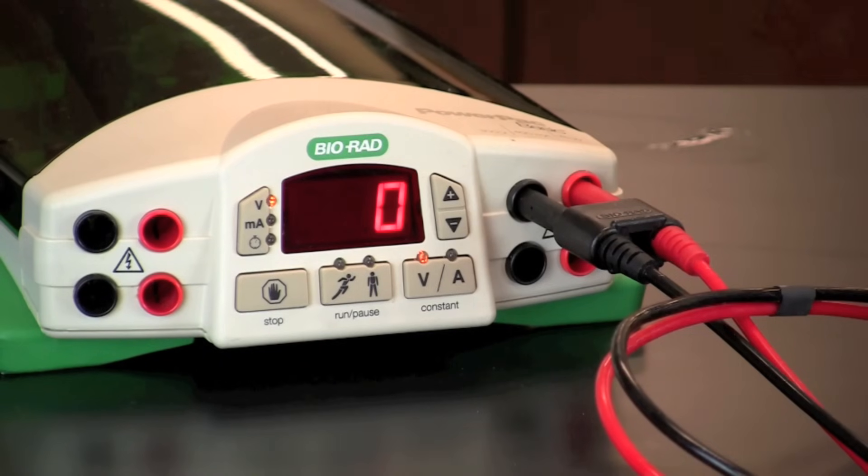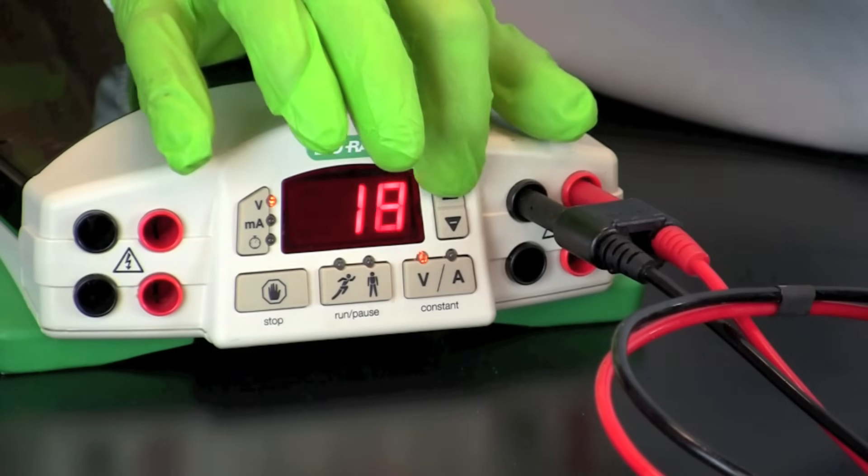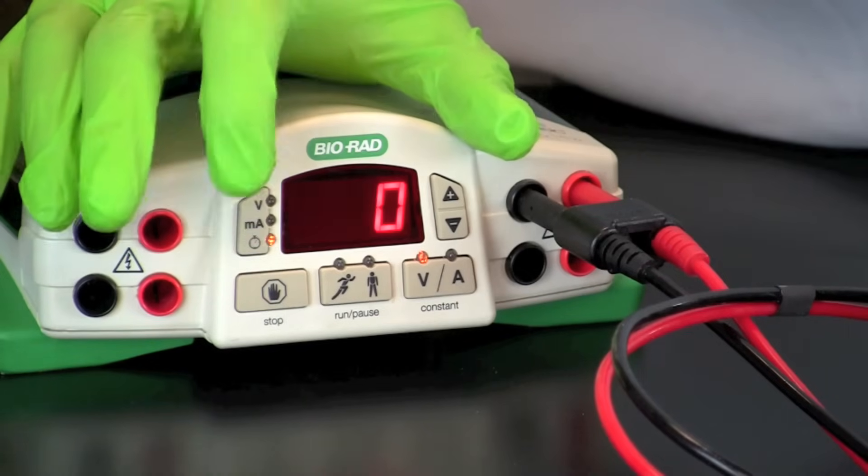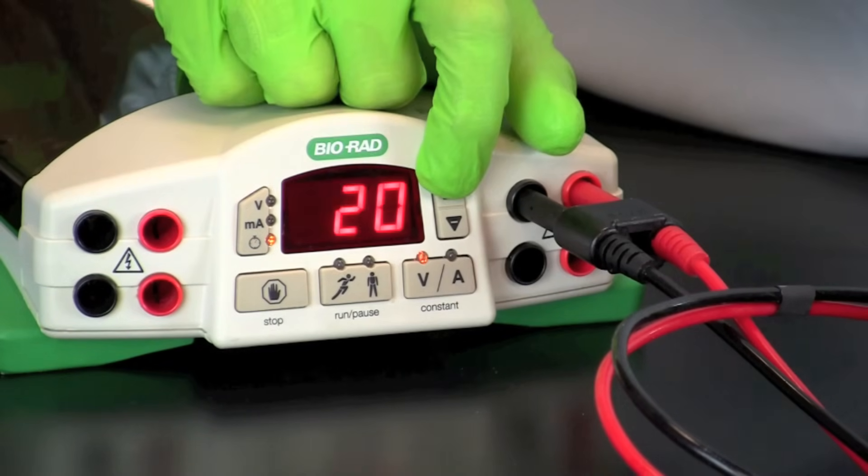Turn on the power supply and run the blot at 20 volts. If a timer is available, set it for two and a half hours.